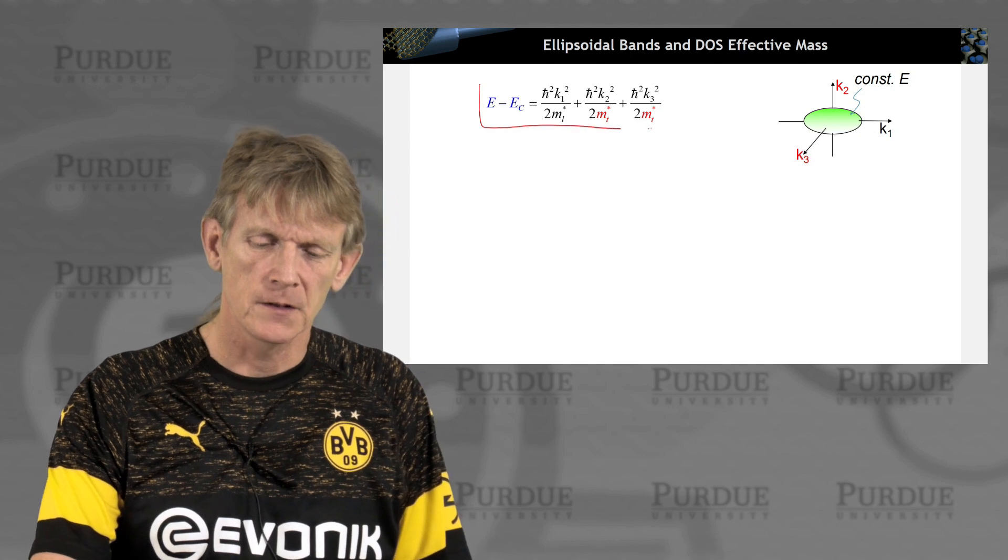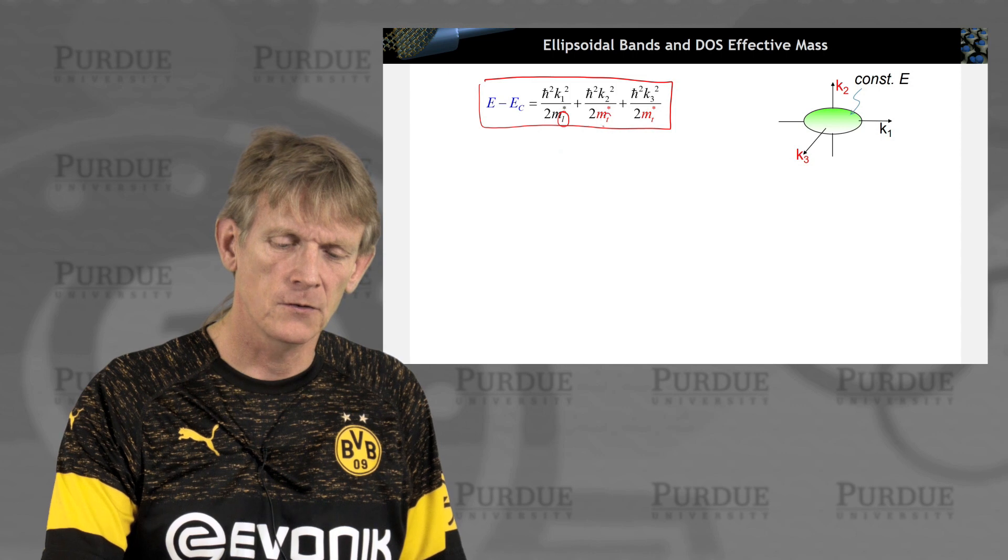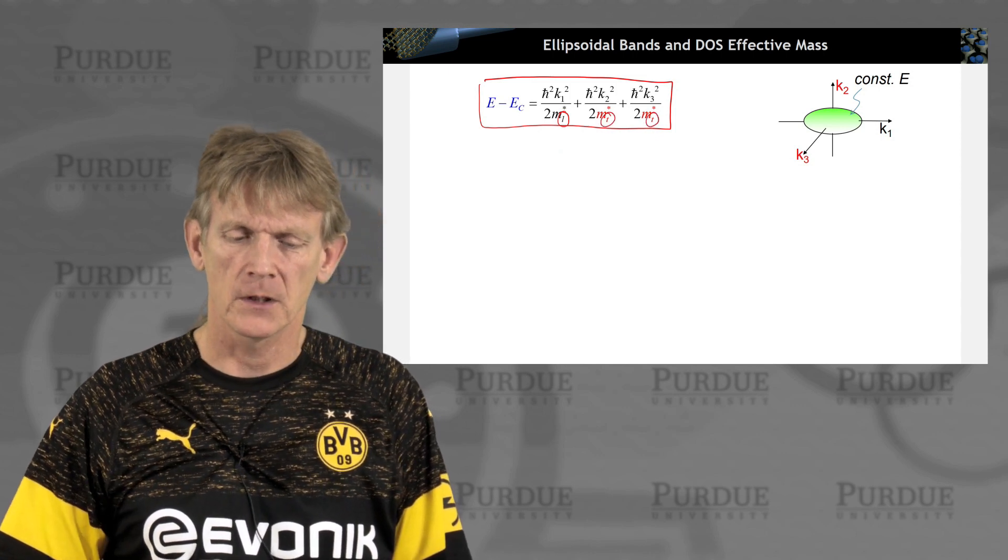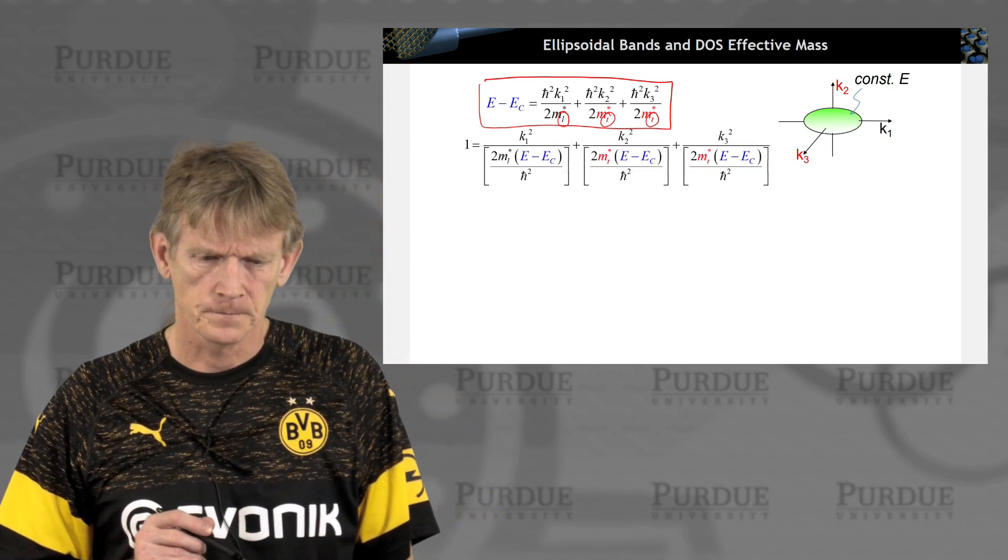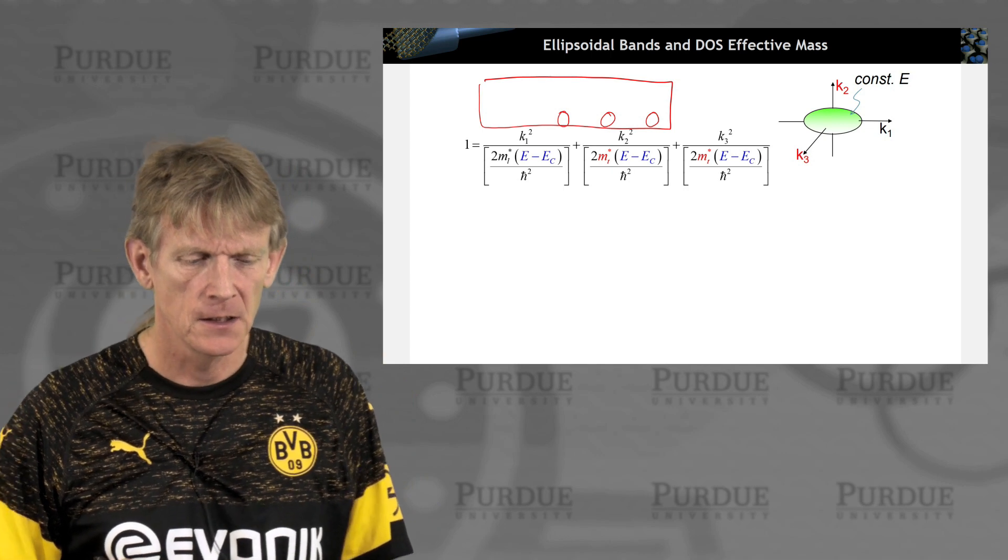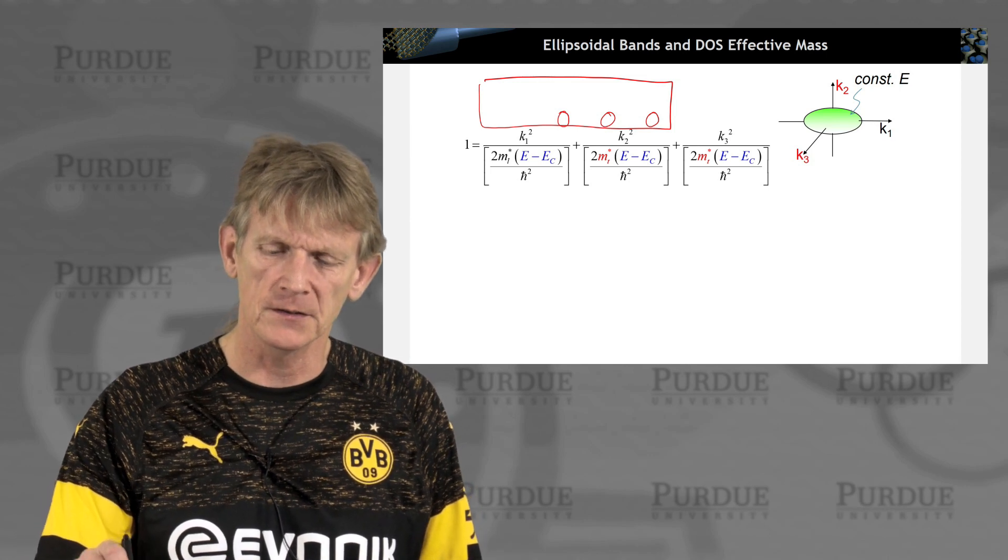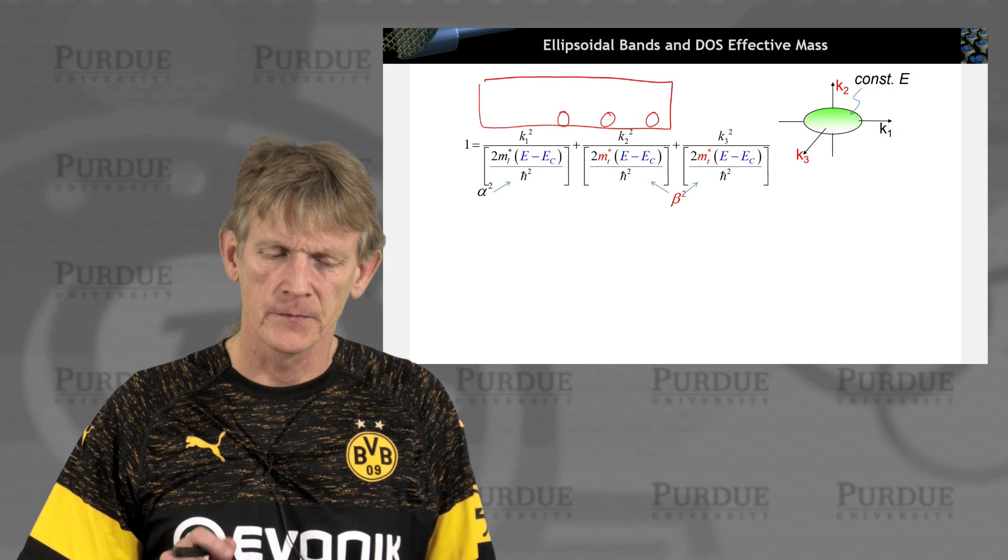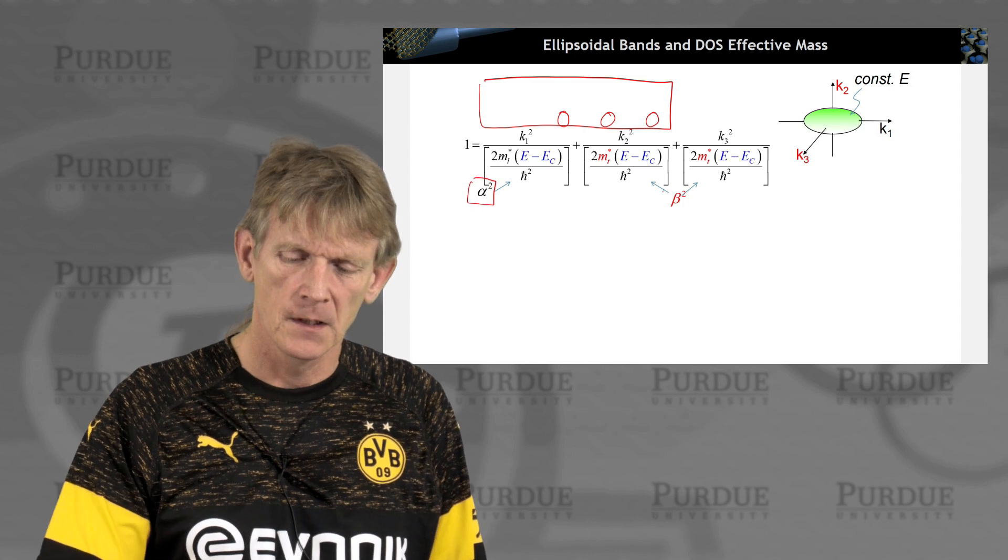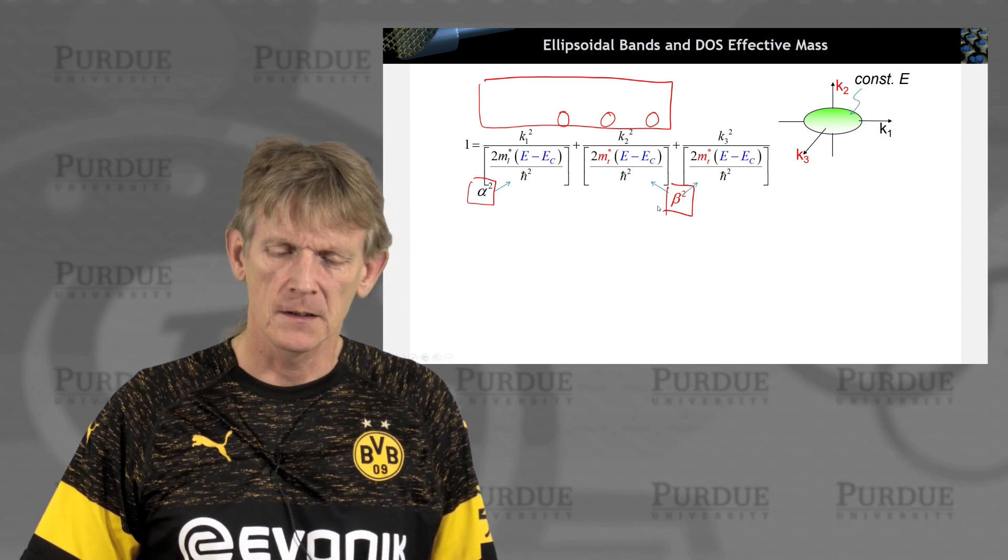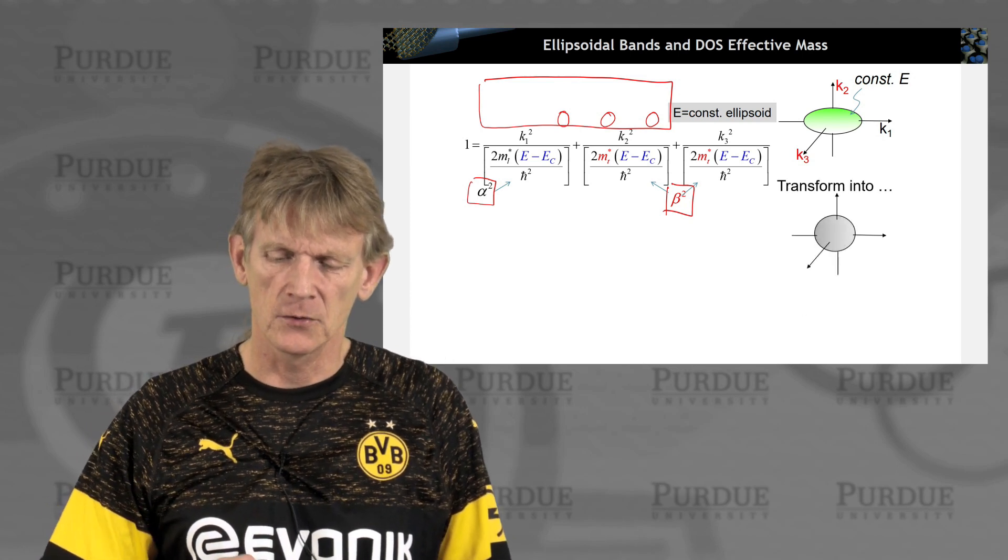Here's the expression for this ellipsoid as a function of one longitudinal mass and two transverse masses. So now let's write down our requirement that the density of states and the number of states in the system must be constant as we replace this ellipsoid with a sphere.